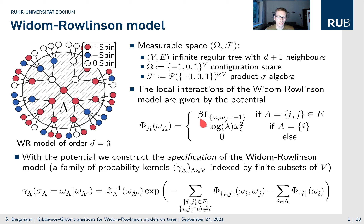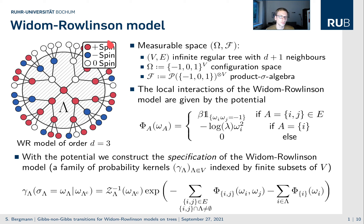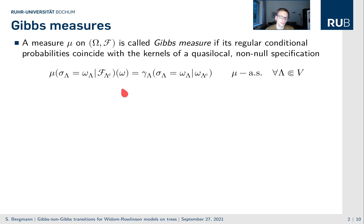and beta governs repulsion between plus and minus spins. If beta is large, adjacent plus and minus spins become less likely. We also have a particle activity lambda, and with growing particle activity lambda, occupied spins — that is, occupied by plus and minus — become more likely, and empty sites become less likely.